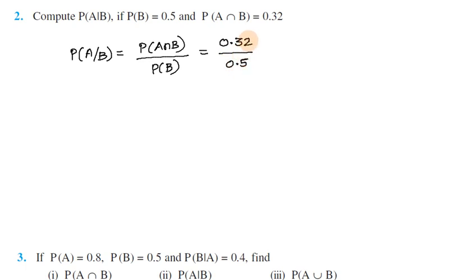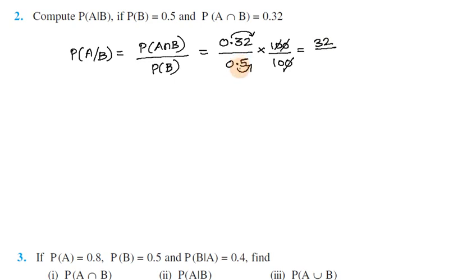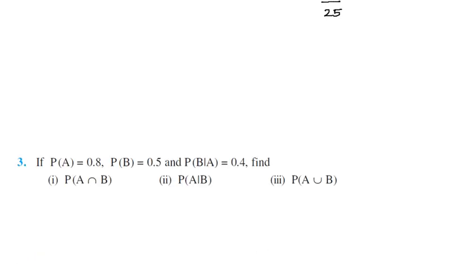Here there are two decimal digits, so we multiply and divide by 100, moving the decimal point two digits. This gives 32 divided by 50. Cancelling, 32 and 50 share a factor of 2, giving 16 divided by 25. So P(E|B) = 16/25.